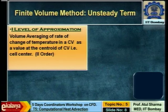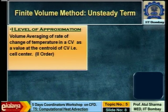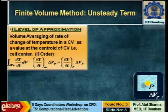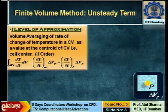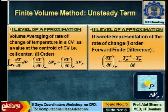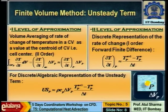The unsteady state approximation has two levels. The first level is volume averaging of rate of change of temperature in a control volume, representing it at the centroid. The second level is the discrete representation of the temperature gradient by first-order forward difference in time, giving the expression: rho × Cp × delta_V_P × (T_P^(n+1) − T_P^n) / delta_t.